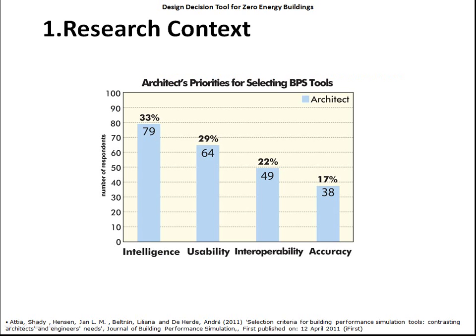Another study I did in 2008 with Texas A&M University — we made a survey, collected responses from 500 engineers and 500 architects, and we asked architects what's the most important ranking criteria for your simulation. The result was architects asked for intelligence while engineers asked for accuracy. It shows again that architects want a tool that's intelligent, that gives direction, that tells you what to do and what not to do.